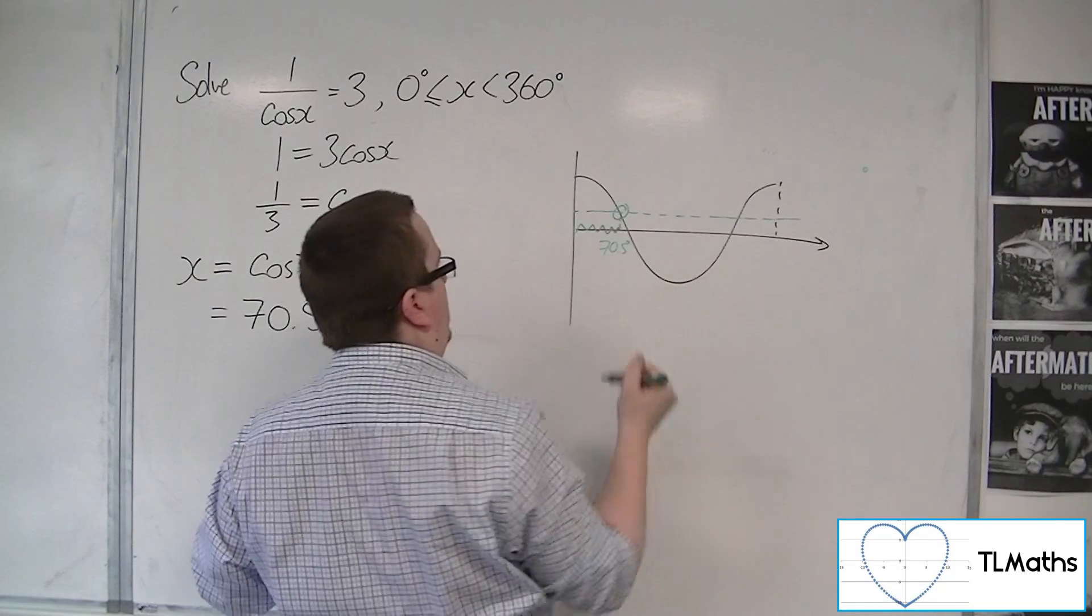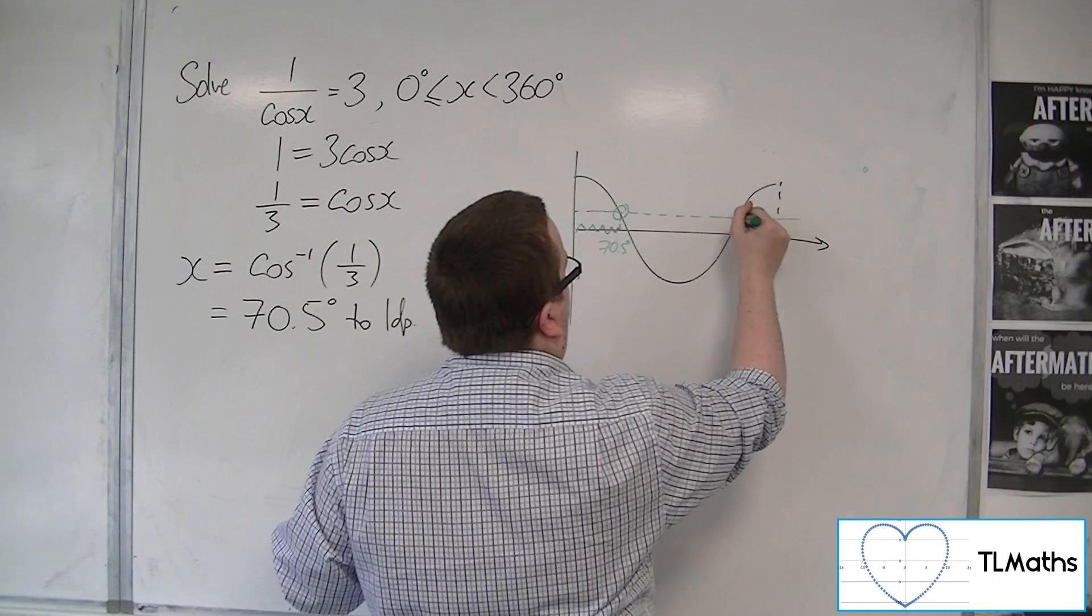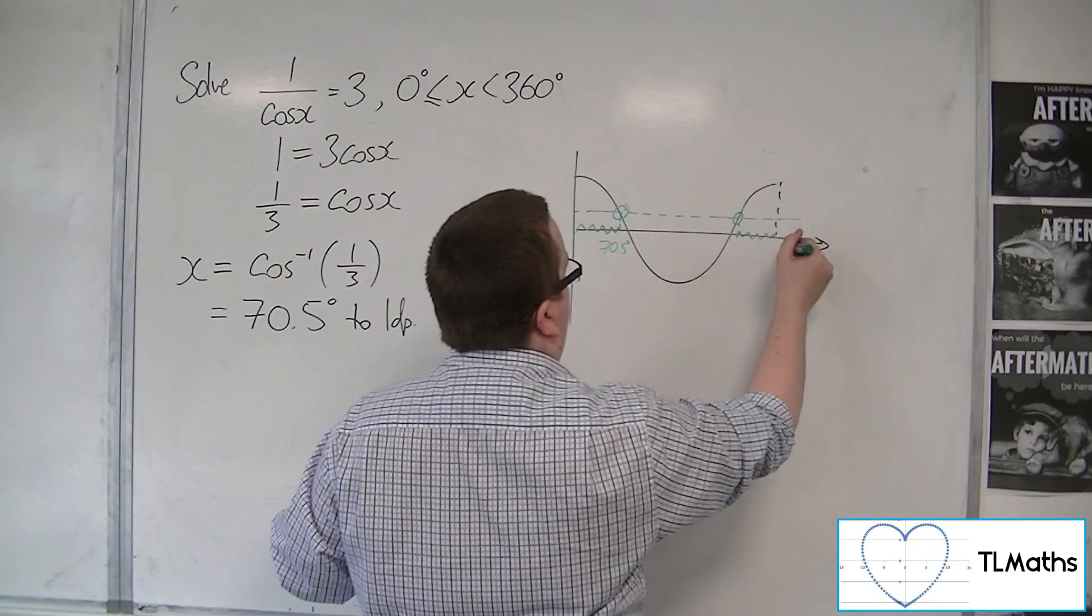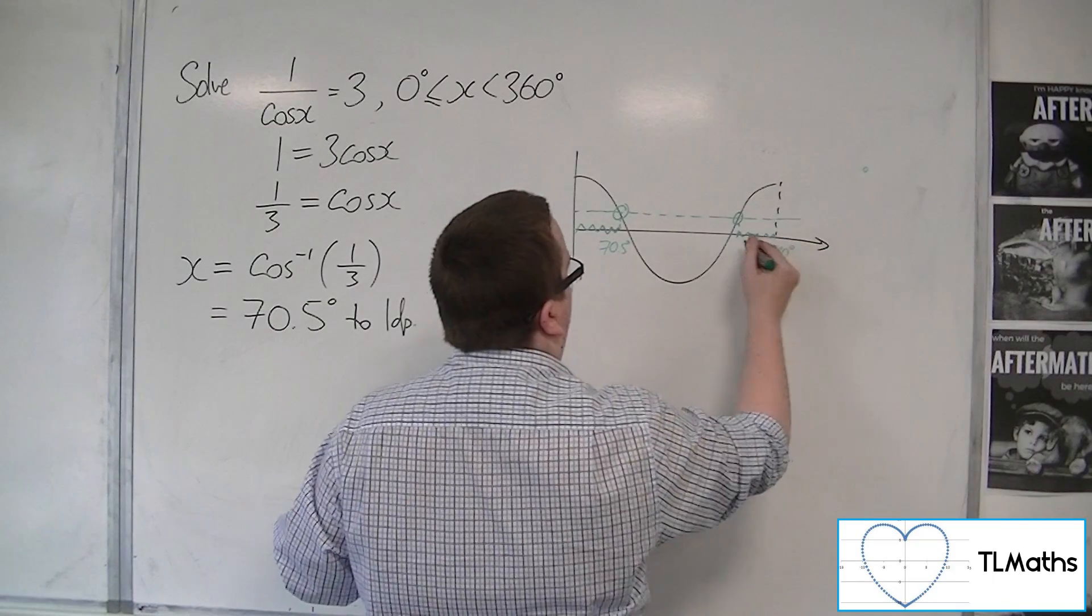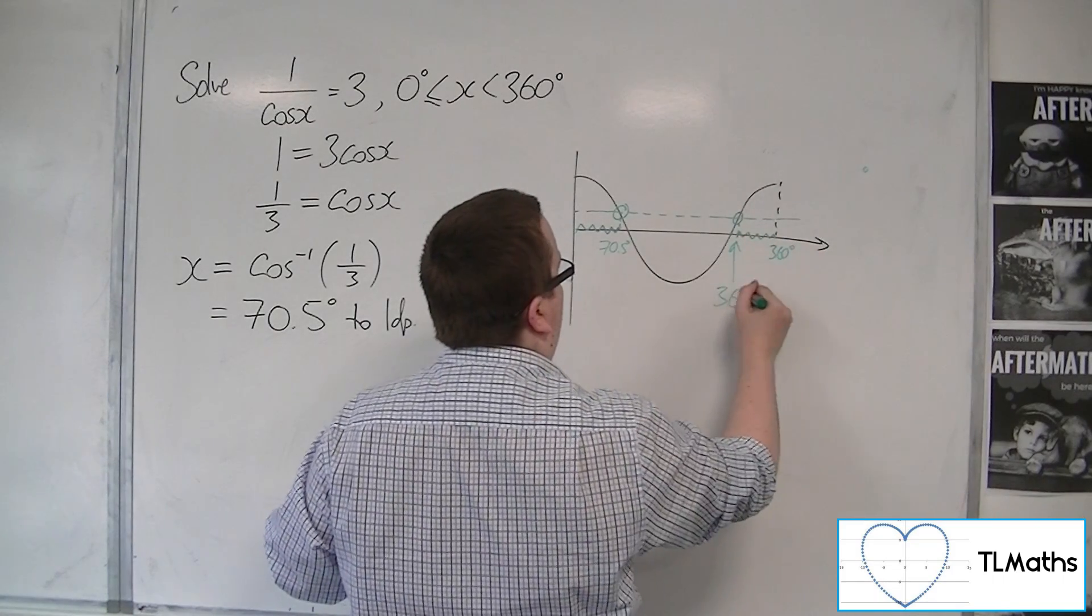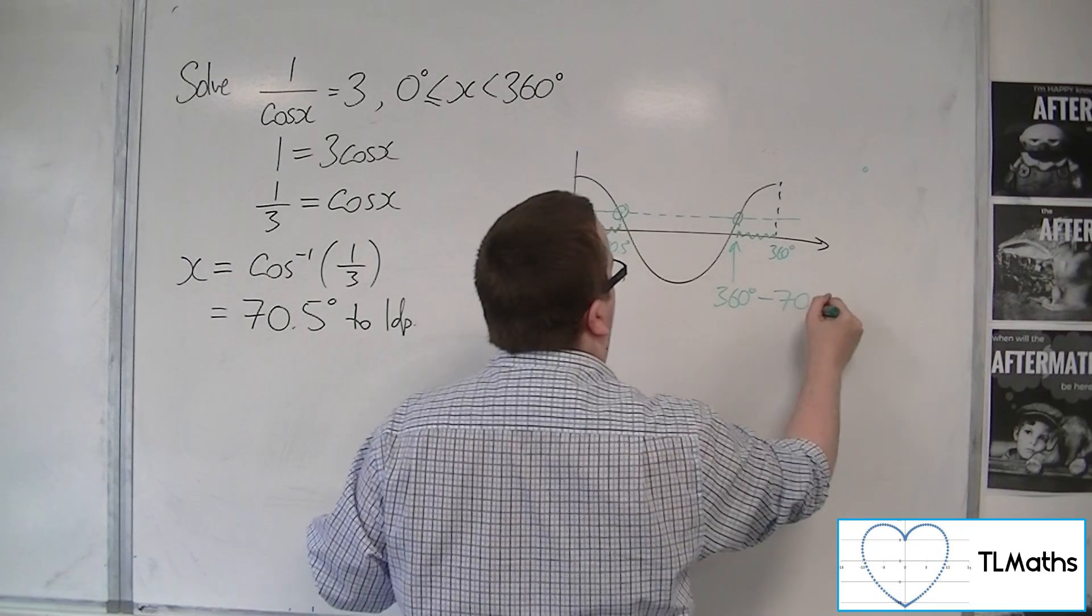So that distance is 70.5. This distance must also be the same. That's 360. So this is 360 take away the 70.5.